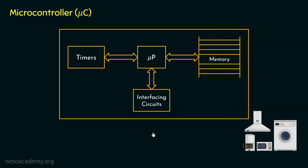Try to understand the difference between the microprocessor and the microcontroller. When we talk about the microprocessor, it is a single chip. However, when we are talking about the microcontroller, on the chip itself we have a basic microprocessor, the memory to store the instructions, the timers, and the interfacing circuits. Remember, the microprocessor used inside the microcontrollers is the basic one, not as advanced as the microprocessors used in general purpose computers.